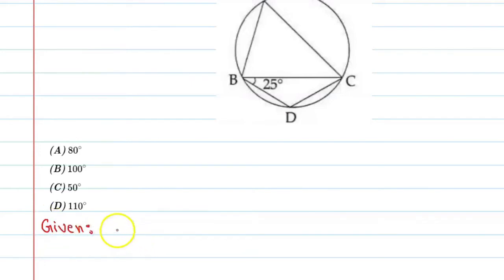Given is angle DBC, angle DBC is equal to 25 degrees, and BD is equal to DC. BD is equal to DC means this side BD is equal to DC. Alright, let's start.